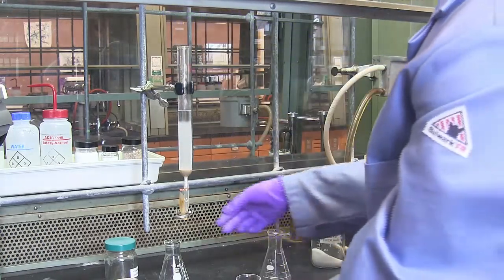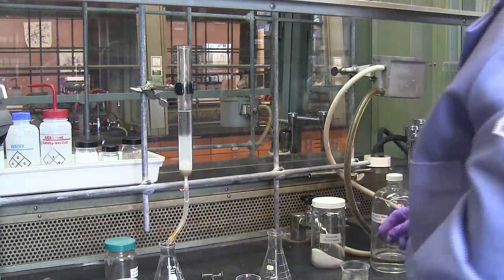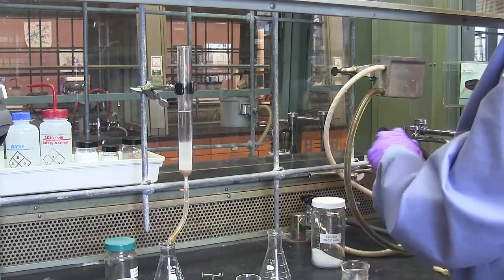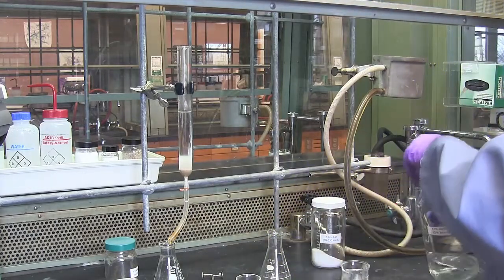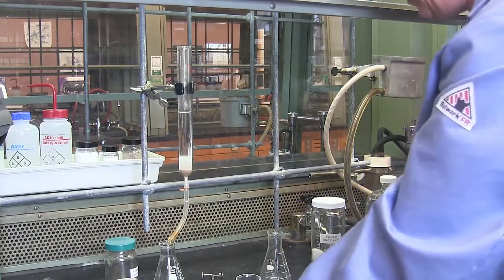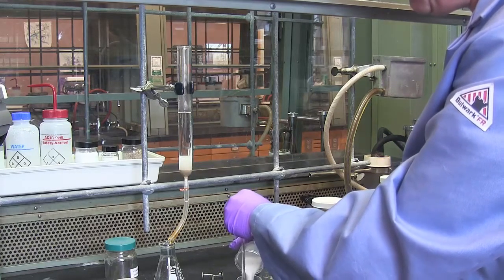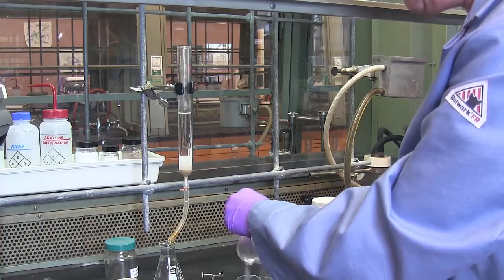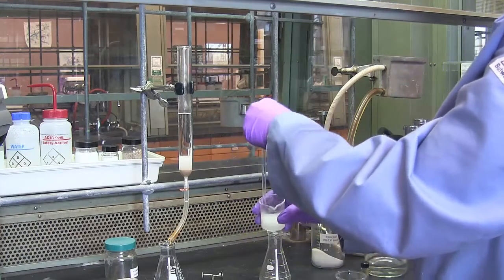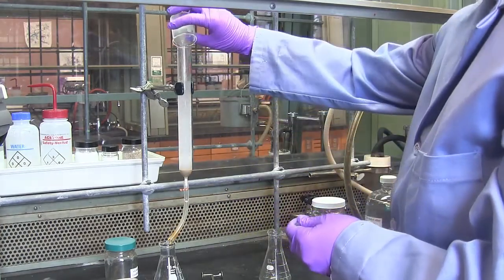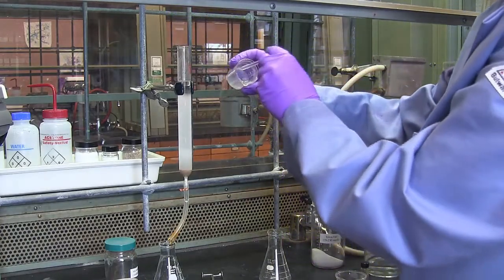At this point, I can open up the column and allow eluent to collect below. I have more silica to add, so I add more solvent. Wet the silica with the solvent by pouring the silica into the solvent, and pour that quickly into my column. You do need to pour it quickly or the silica gel will stay behind in your flask.